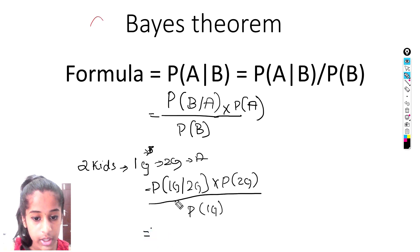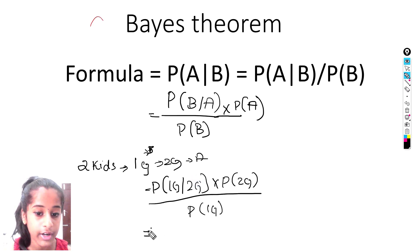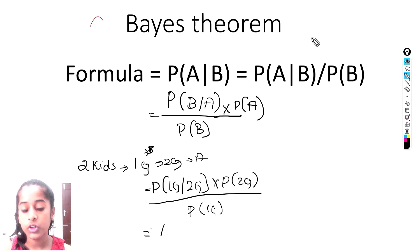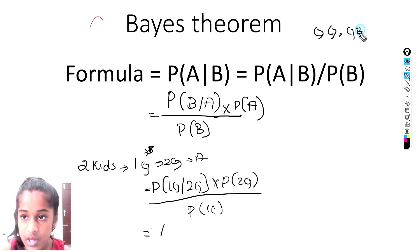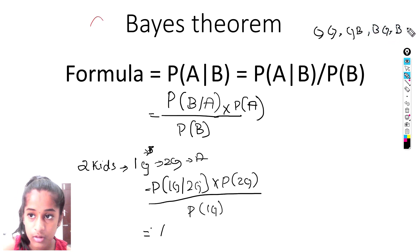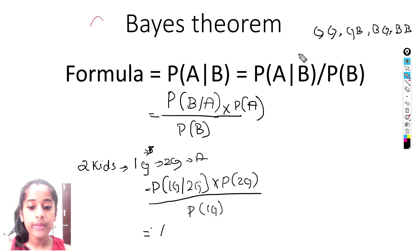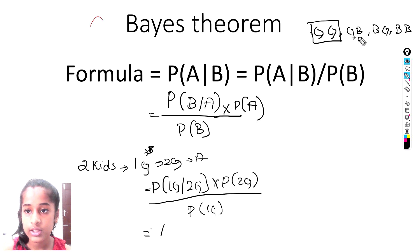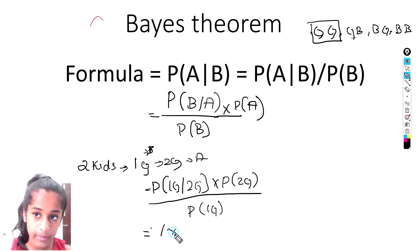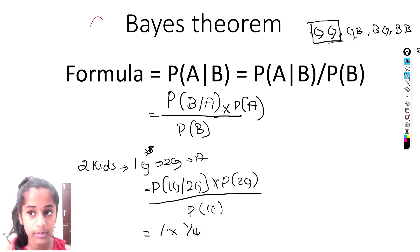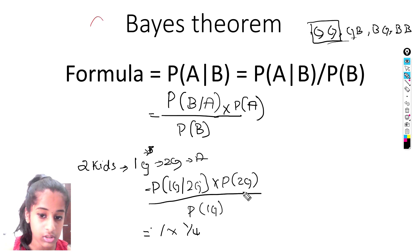Now let's solve it. Out of two girls we are sure that one is a girl, so that probability is 1. Now let's list out all the possible combinations for two kids: two girls, a girl and a boy, a boy and a girl, or a boy and a boy. That gives us 4 outcomes. The probability of two girls is 1 out of 4, so it is 1 by 4.